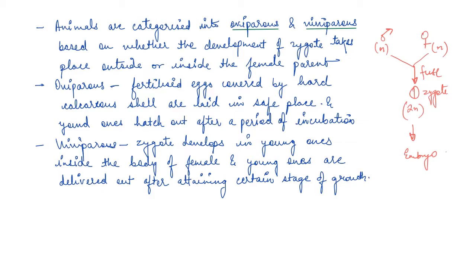So with this, we finish the other two events — fertilization and post-fertilization — in case of both plants and animals. We will take these up separately for plants and animals in later chapters. I hope you understood the three events: pre-fertilization, fertilization, and post-fertilization in detail. If not, please drop a message on the WhatsApp number in the description or in the comments. If you found this helpful, please like the video and share it with your friends. Thank you so much, bye-bye.